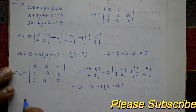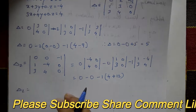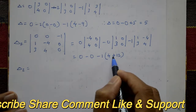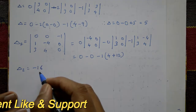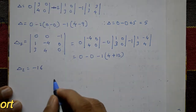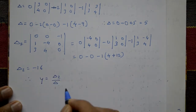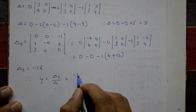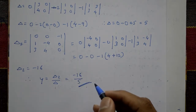Therefore delta_2 equals minus 16. Now by Cramer's rule, y equals delta_2 divided by delta, which is minus 16 divided by 5. This is the required solution.